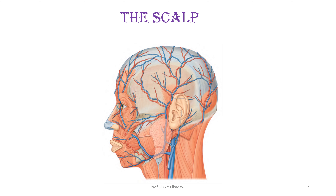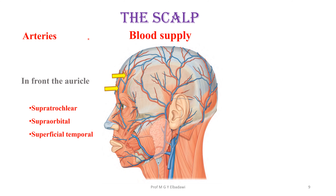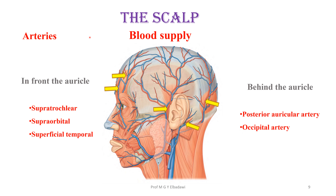The blood supply of the scalp comes from arteries in front of the auricle: the supratrochlear, supraorbital, and superficial temporal arteries. Behind the auricle, there will be the posterior auricular artery and the occipital artery.